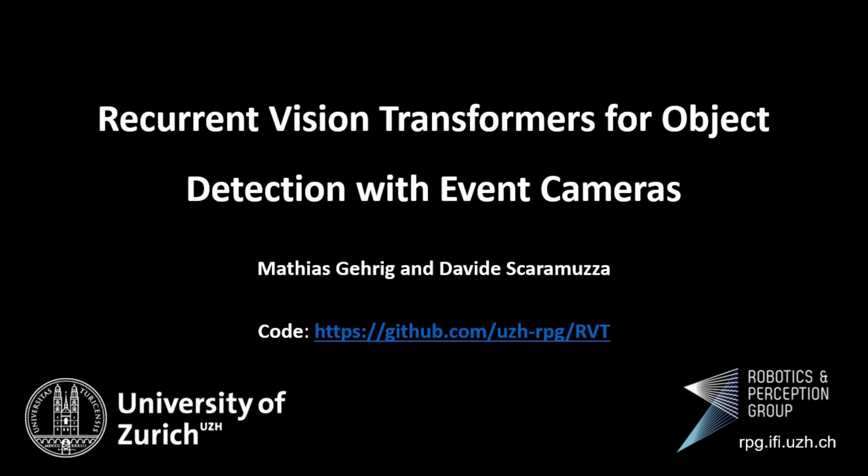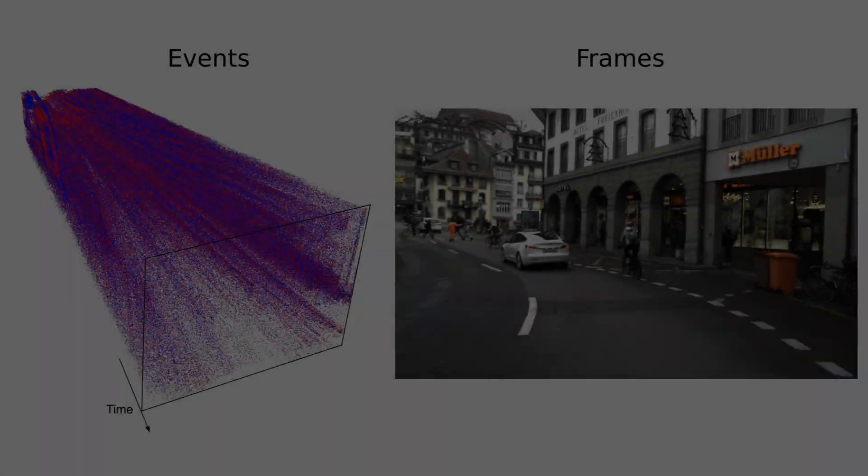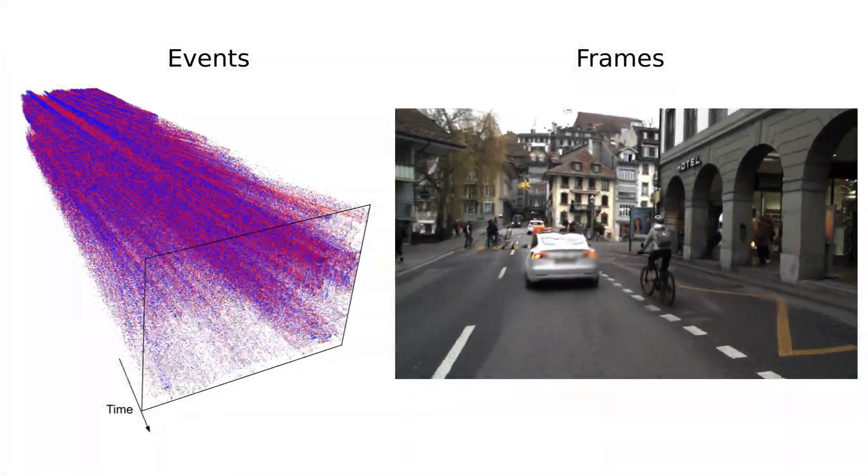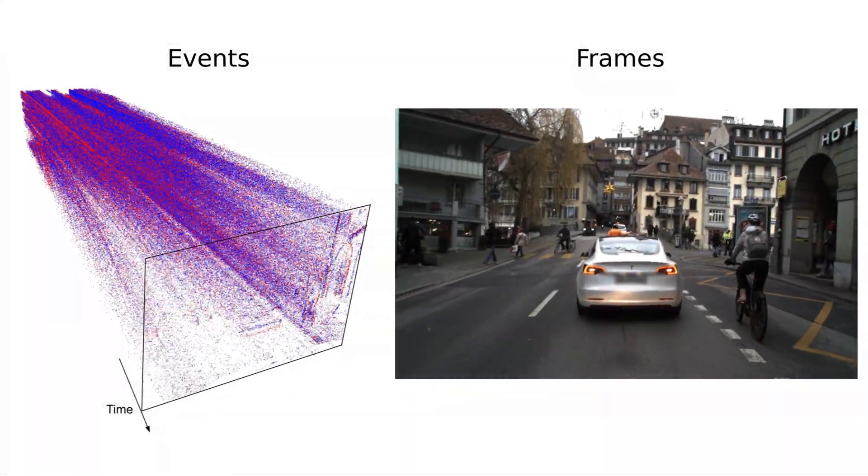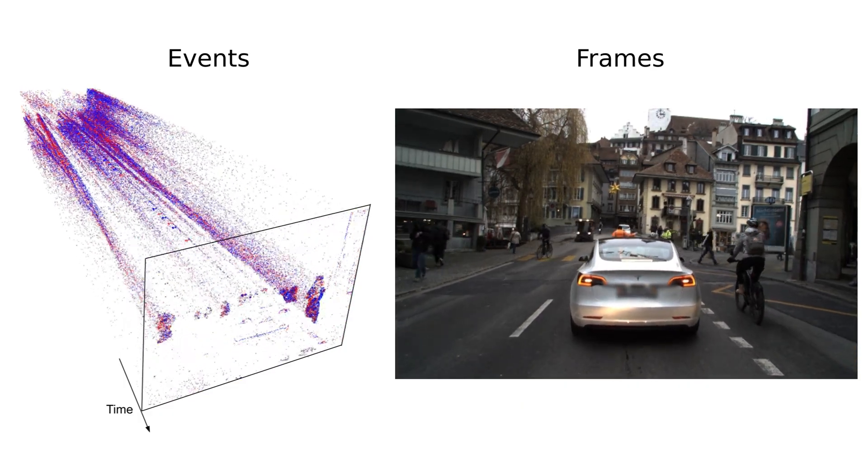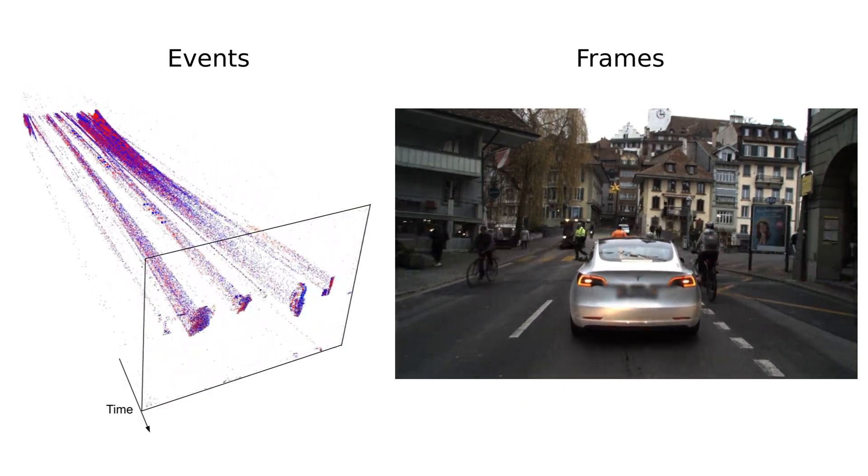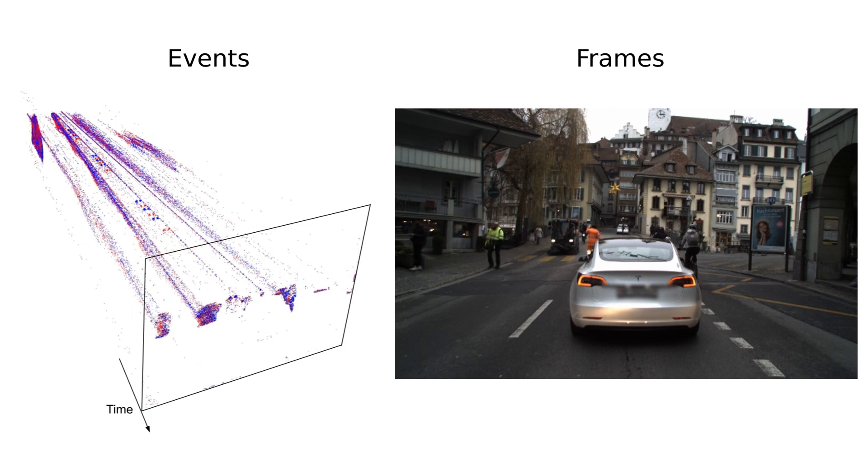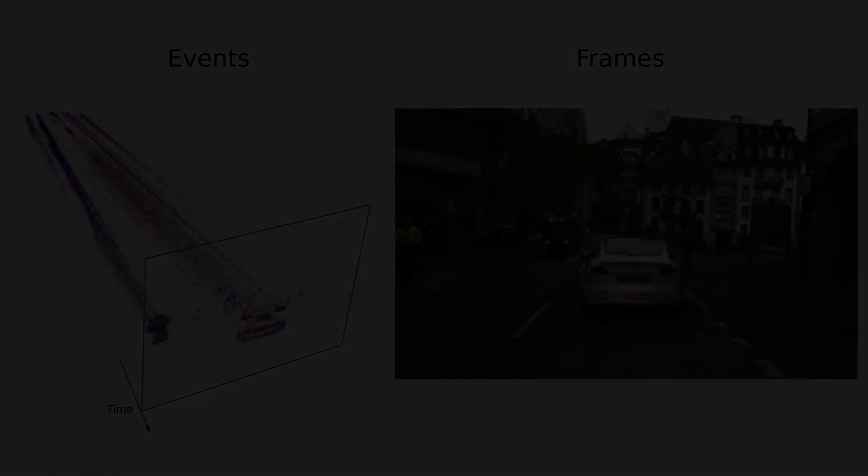We introduce recurrent vision transformers for object detection with event cameras. Event cameras provide visual information with sub-millisecond latency at a high dynamic range while being robust to motion blur. These unique attributes make them ideal for low-latency object detection and tracking in time-sensitive scenarios.